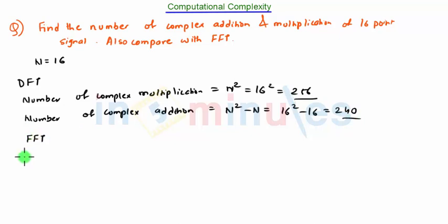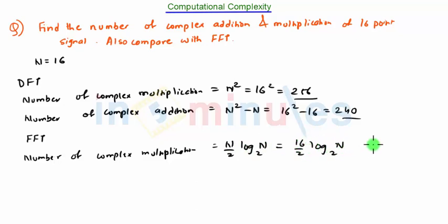Now using the FFT algorithm, the number of complex multiplications equals (N/2) log₂N. That is (16/2) log₂16.